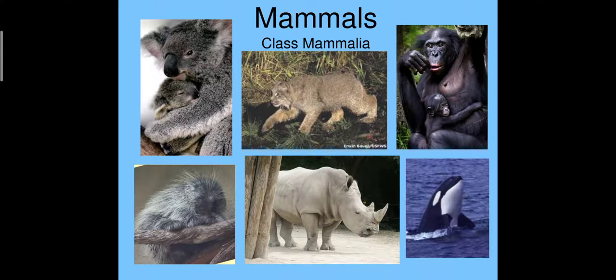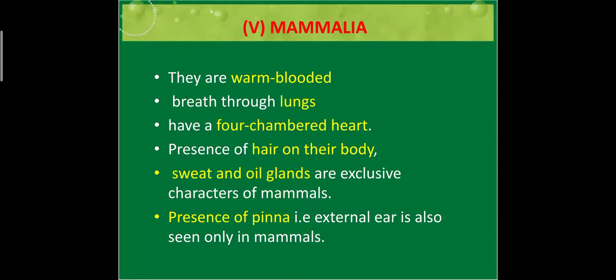Our fifth class is class Mammalia, which includes mammals. They are warm-blooded. They breathe through lungs. Their heart is four-chambered. They have hair on their body. Apart from that, they have sweat and oil glands which make them different from other animals. They have the presence of pinna — the external ear is seen only in mammals.